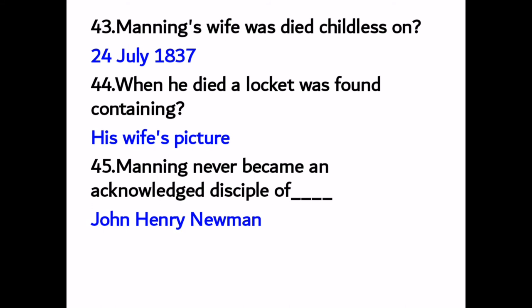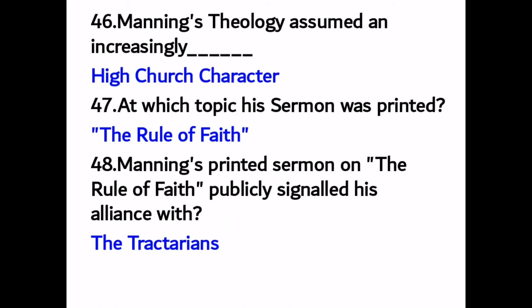Number forty-five: Manning never became an acknowledged disciple of John Henry Newman. Number forty-six: Manning's theology assumed an increasingly High Church character. Number forty-seven: his sermon was printed on the topic 'The Rule of Faith.'